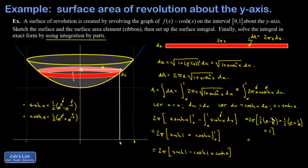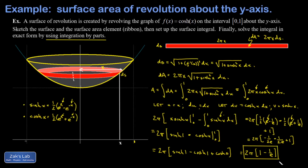Looking at the simplification: there's a (1/2)e from the sinh term and a −(1/2)e from the cosh term — those cancel. We're left with 2π times (−1/(2e) − 1/(2e) + 1), where the two negative terms combine to give −1/e. So the exact surface area is 2π(1 − 1/e).